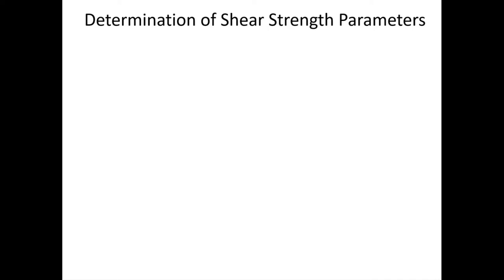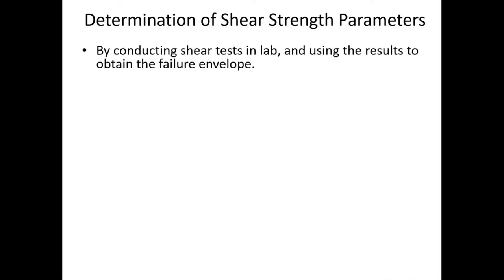Today we will see different tests for determining the shear strength parameters of soil. We have to determine shear strength parameters of soil — C and phi. How can you find out C and phi of the soil? From the Mohr circles. You plot a Mohr circle for a stress system of sigma and tau for different values of normal stress and corresponding shear stresses.